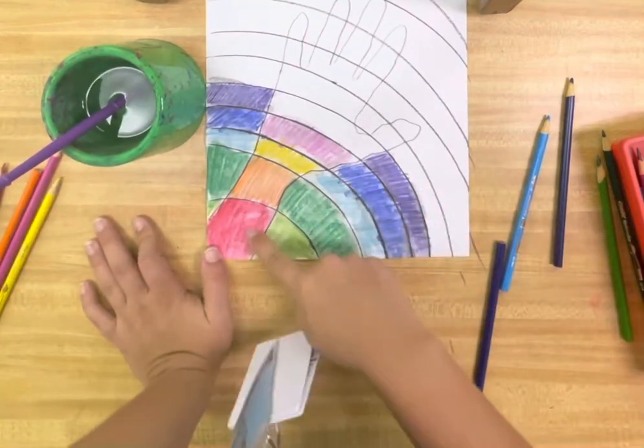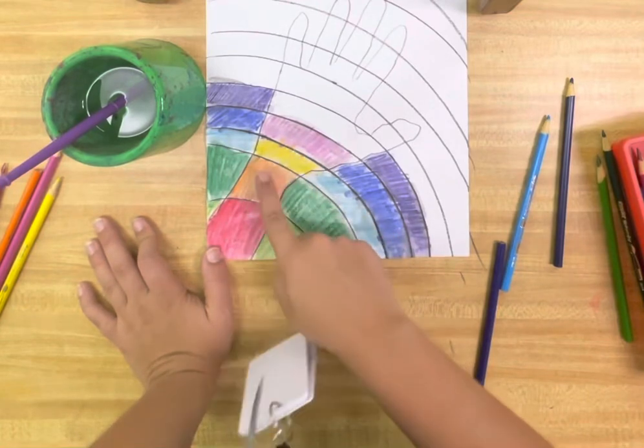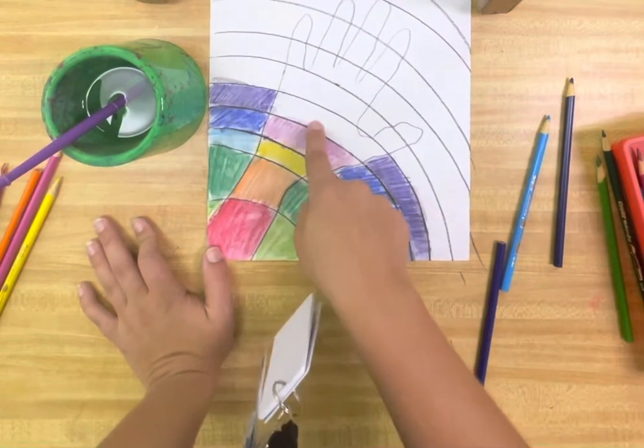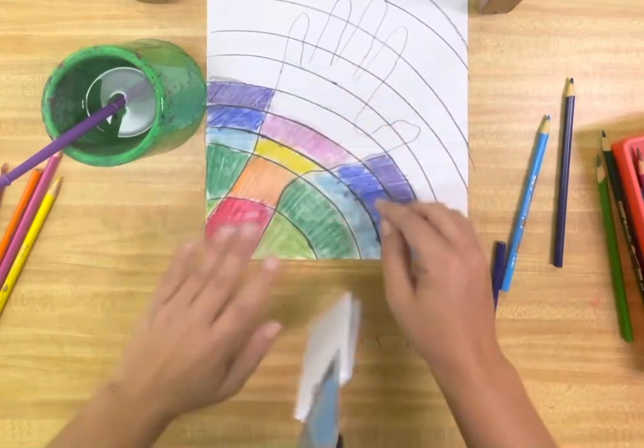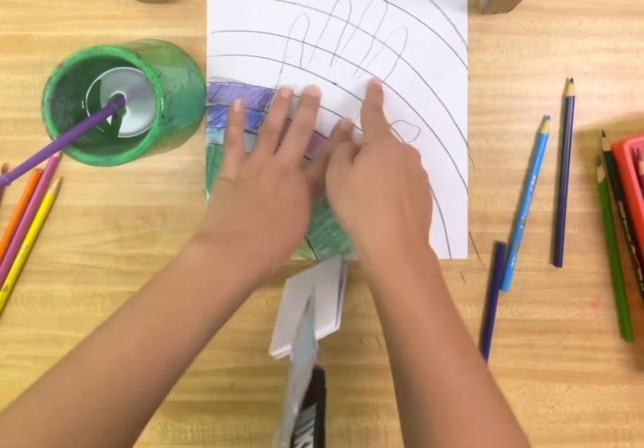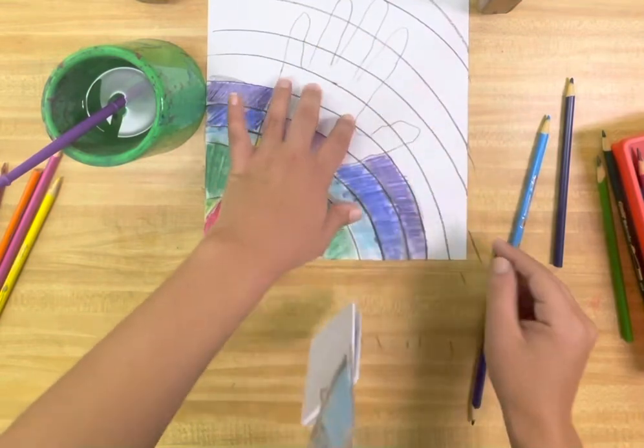So what I would probably do is just repeat my pattern. So I started with red with my warm colors. So once I used orange, yellow, and pink, I'd go back to red, orange, yellow, pink. Now the fingers get tricky. Again, just follow the line and figure out where you need to put each color.